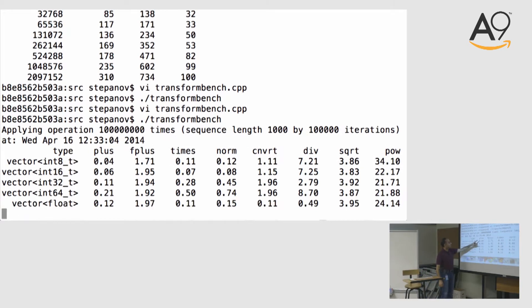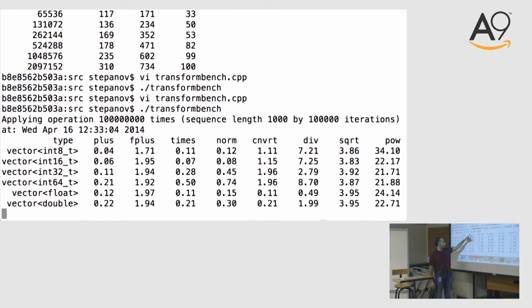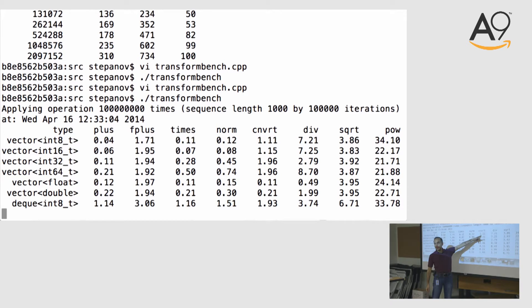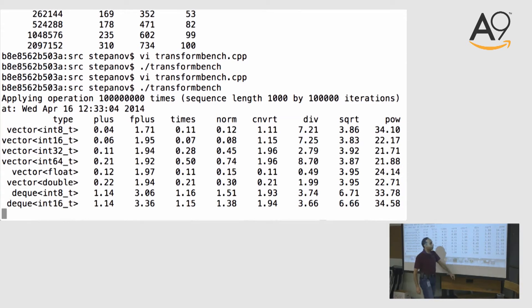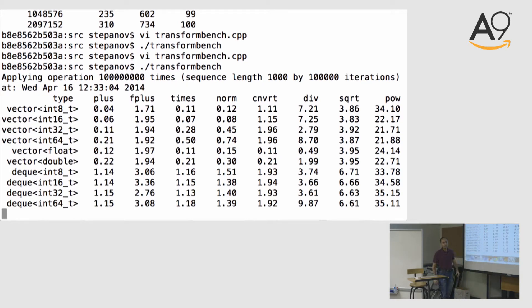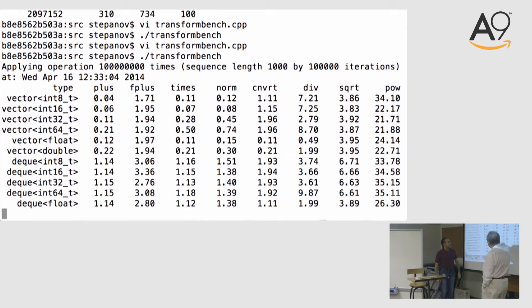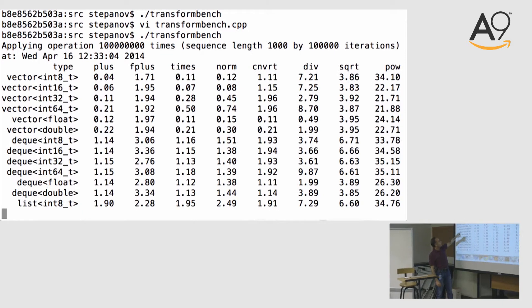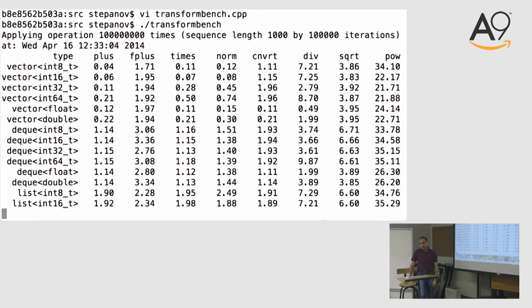So, this has a lot of data in it. So, we'll spend some time looking at it. Let's start here. Let me explain the table. These are the operations I described. Plus, plus with a function call. Multiply x squared plus y squared. Convert to float and add. Divide square root power. And all of the measurements are nanoseconds per operation. So, we've averaged over 100,000. Except sometimes, these are picoseconds. Let's first just look at these numbers. Because these are really peculiar.